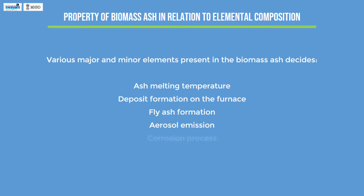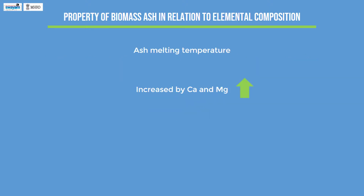Aerosol emission and the corrosion process during biomass burning for energy production are also affected by elemental composition. The presence of calcium and magnesium increases the ash melting temperature, while potassium and chloride decreases it.